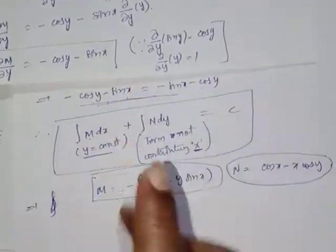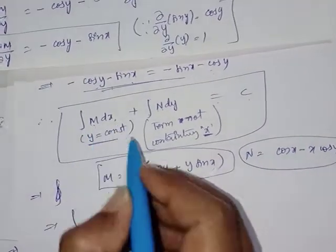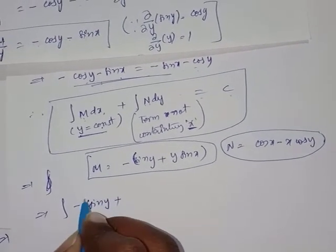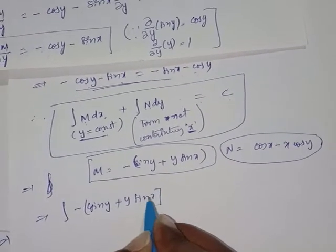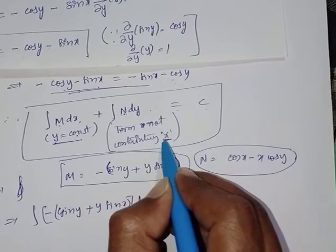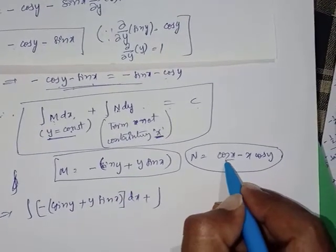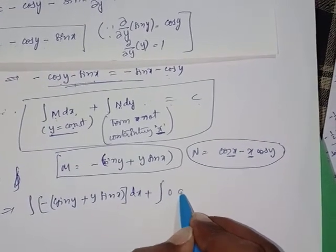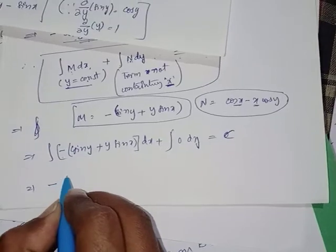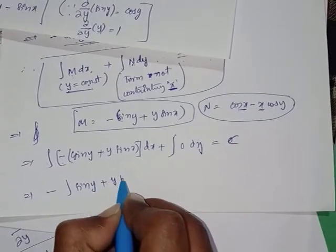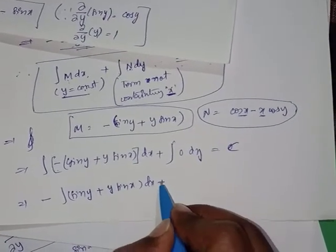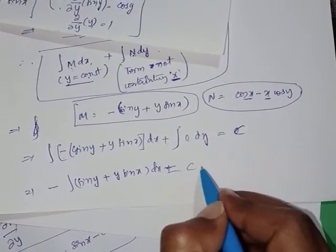∫(-sin y - y sin x) dx + ∫(not containing x terms of N) dy = c. Since all terms in N contain x, the second integral is 0. So we have: -sin y · ∫1 dx - y · ∫sin x dx = c, giving -x sin y - y(-cos x) = c.